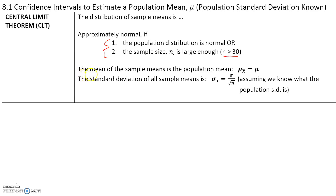The mean of the sample means is the population mean — the mean of all sample means x-bar is equal to the population mean. The standard deviation of all sample means, sigma x-bar, is equal to sigma (the population standard deviation) divided by the square root of n, where n is the sample size. This assumes we know the population standard deviation.